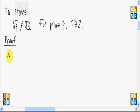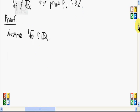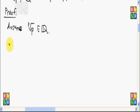So first, we assume that the n root of p is a rational number. Let's try to see what will happen if we assume that the n root of p is a rational number. If that were true, then this would imply that the n root of p can be written as a over b.